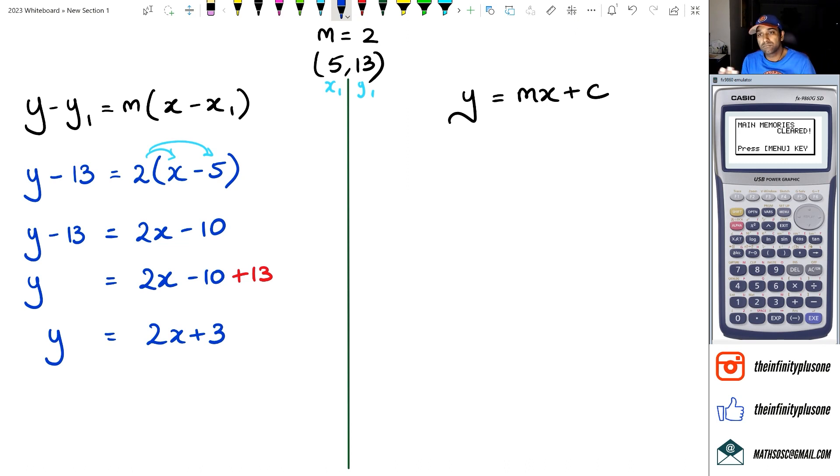All right, now using the same idea, if we were to use the y equals mx plus c formula, what we're going to get is—we're going to put x is 5, y as 13, which means we're going to get 13 equals m, which happens to be 2, times 5, plus c.